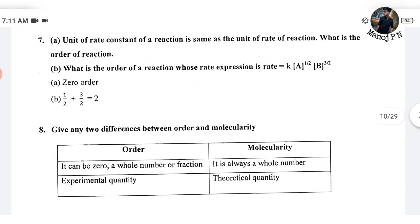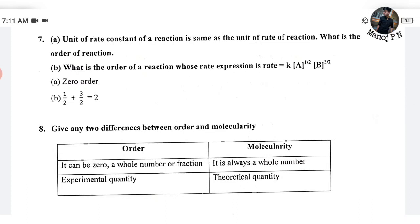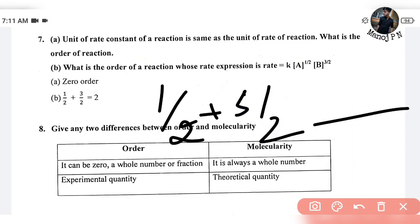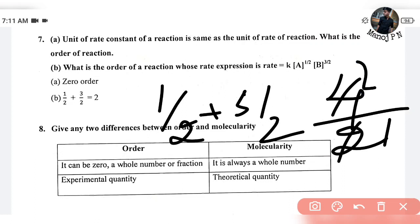What is the order of the reaction when the rate expression is k into A to the half plus B into B to the 3 by 2? This is very simple — just add the powers. Half plus 3 by 2: the numerator is 1 plus 3, giving 4 over 2, which equals 2. The answer is 2.